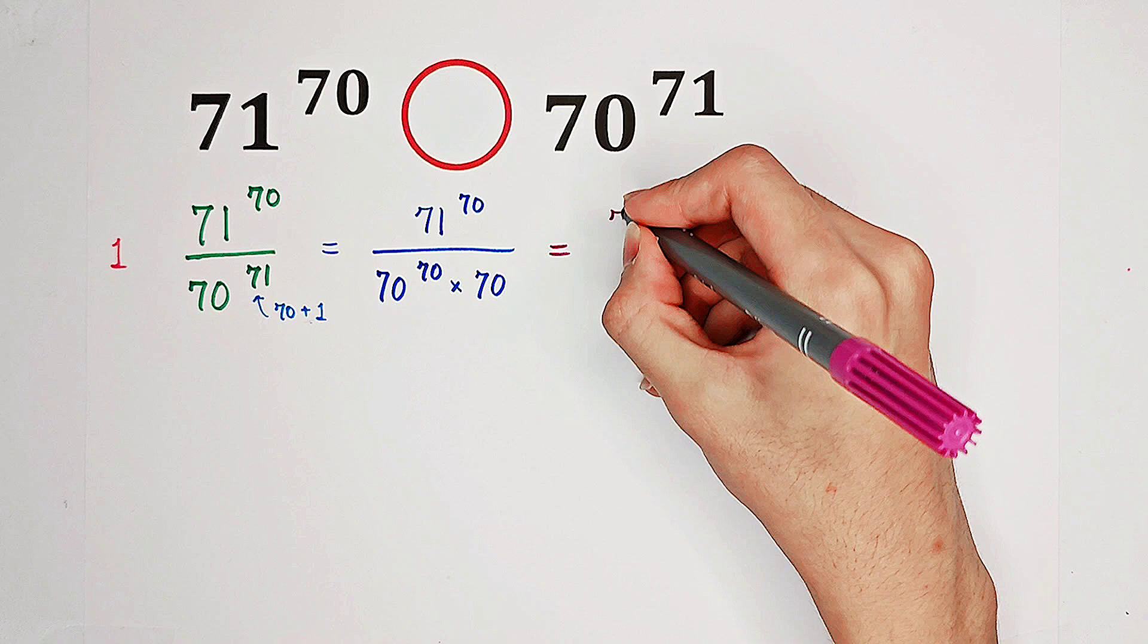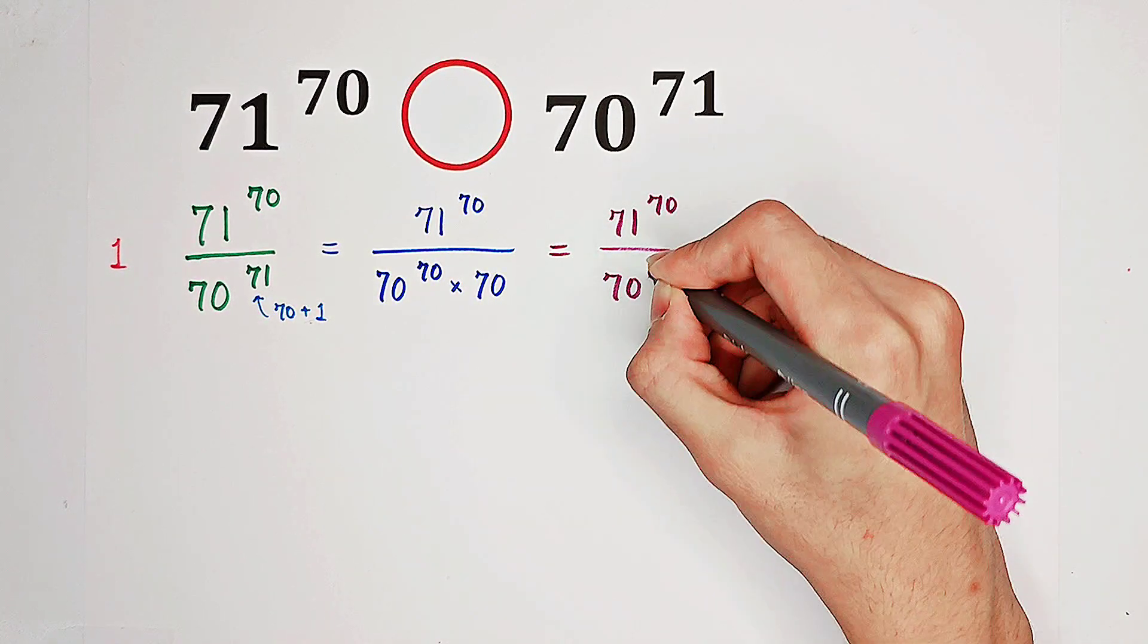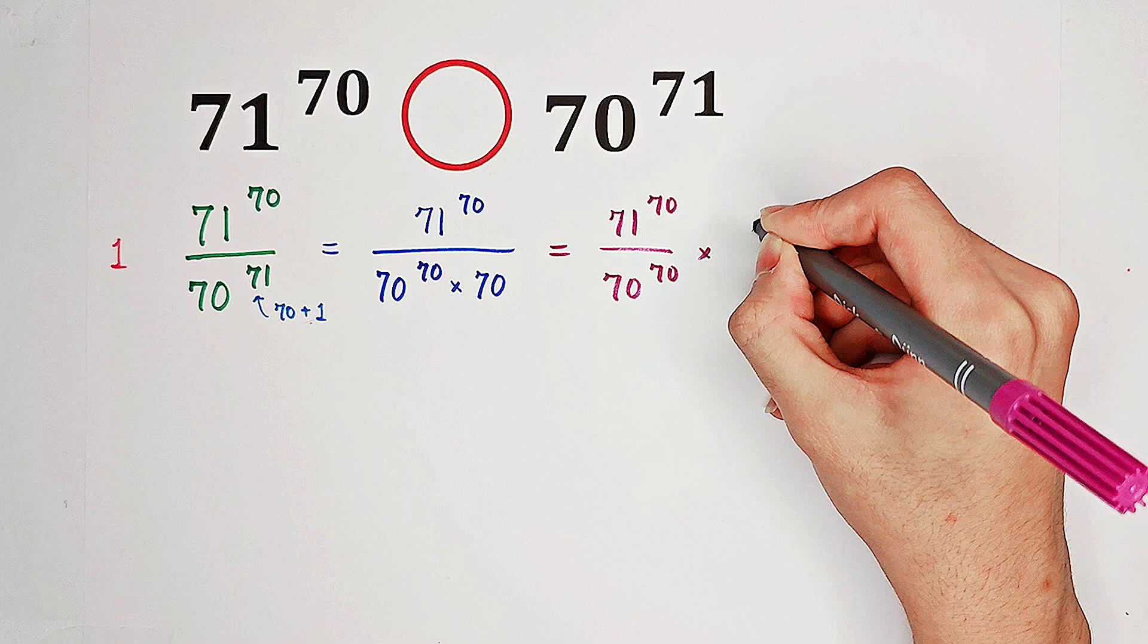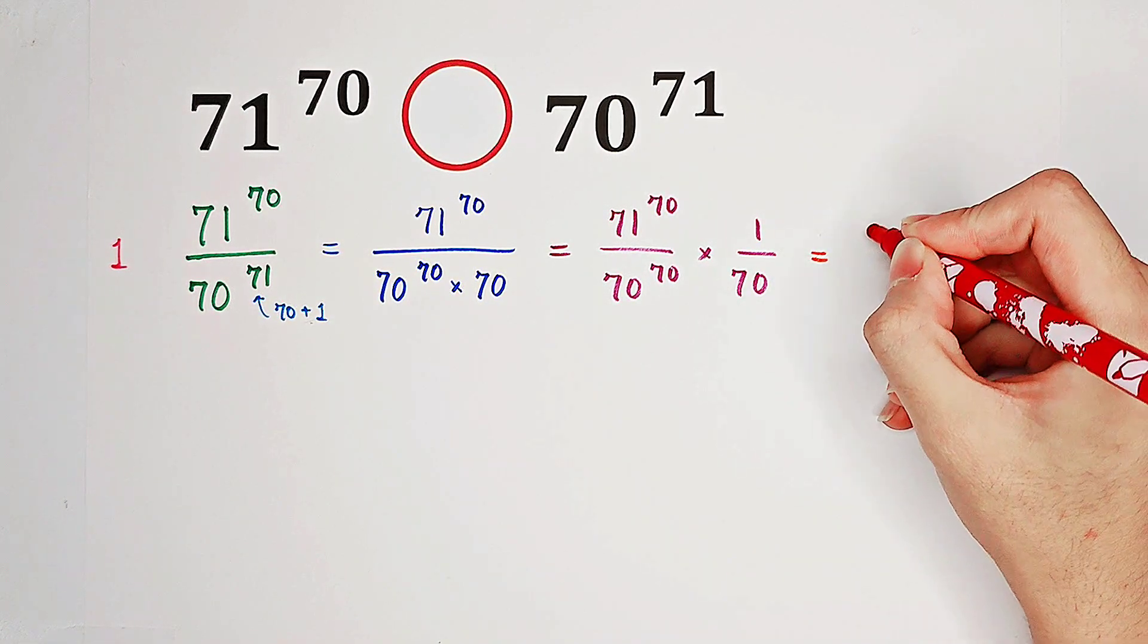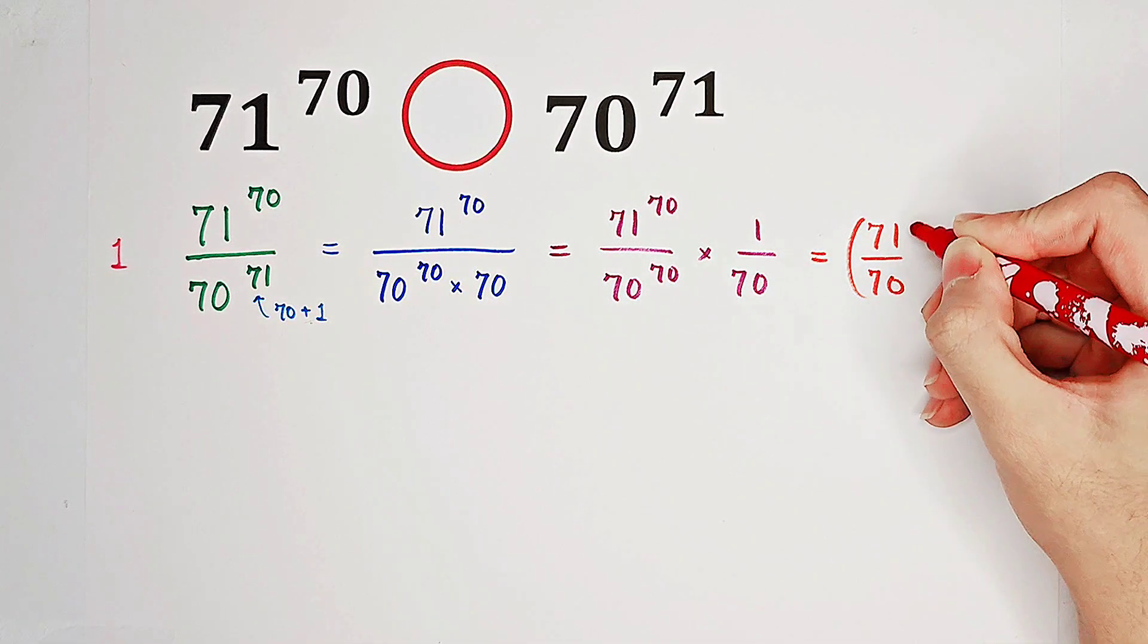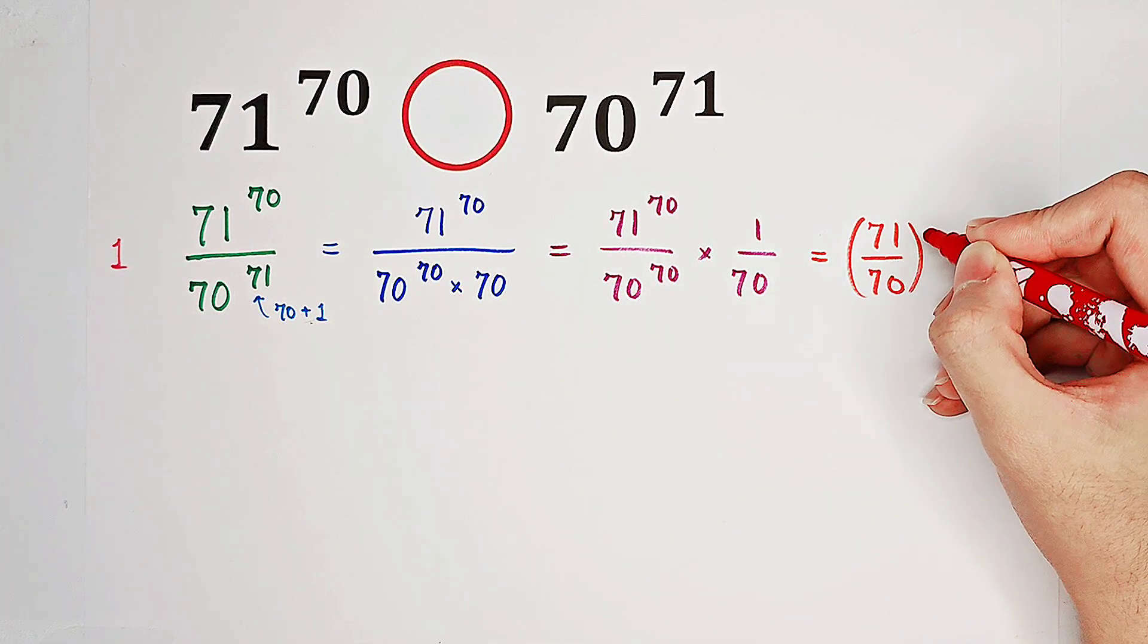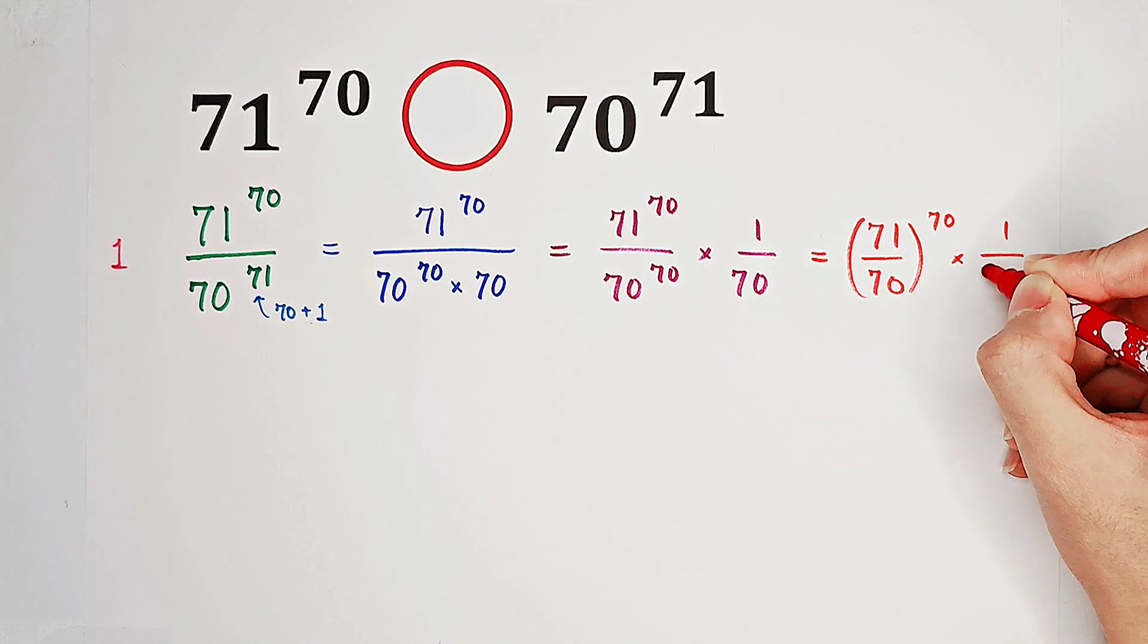Now, this can be written as 71 to the power of 70 over 70 to the power of 70, and then times 1 over 70. Since they have the same exponent, and that is 70, we can check it out, it is 71 over 70 to the power of 70, and then times 1 over 70.